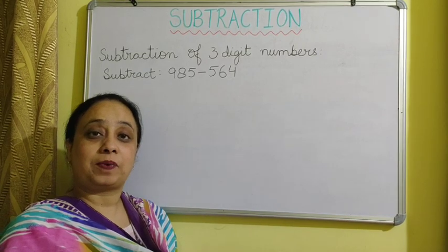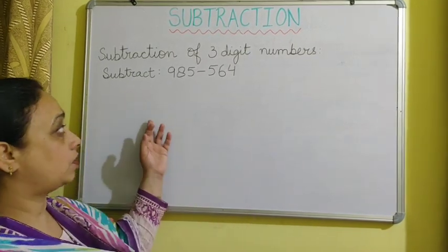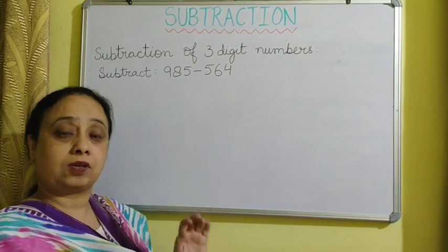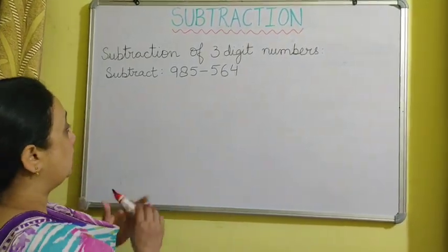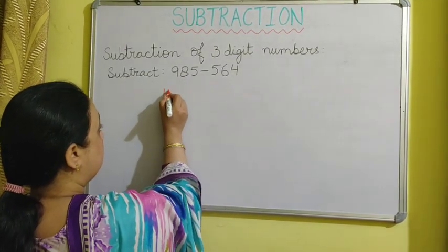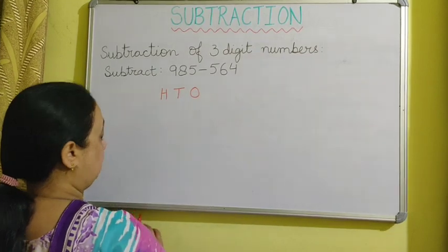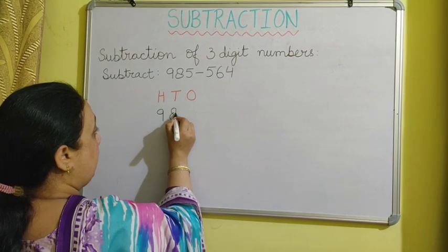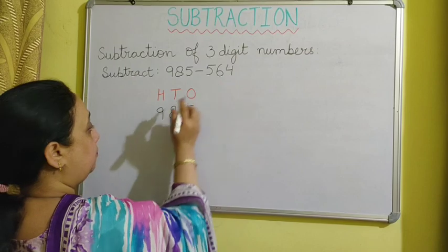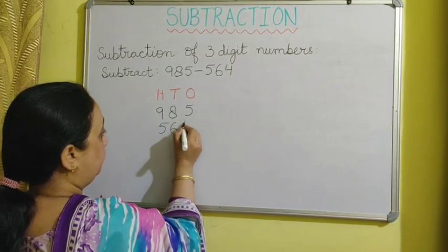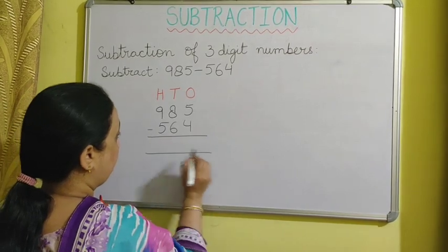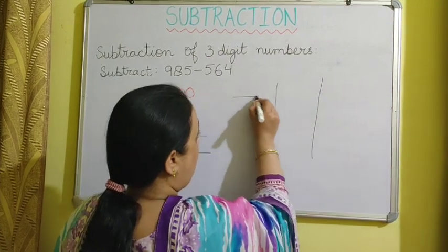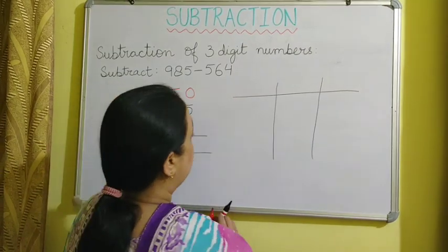Today we are going to practice subtraction of 3-digit numbers. Suppose we have to subtract 564 from 985. First, we are going to arrange these numbers in columns — one below the other — with columns for hundreds, tens, and ones. We have 985 on top and 564 below.